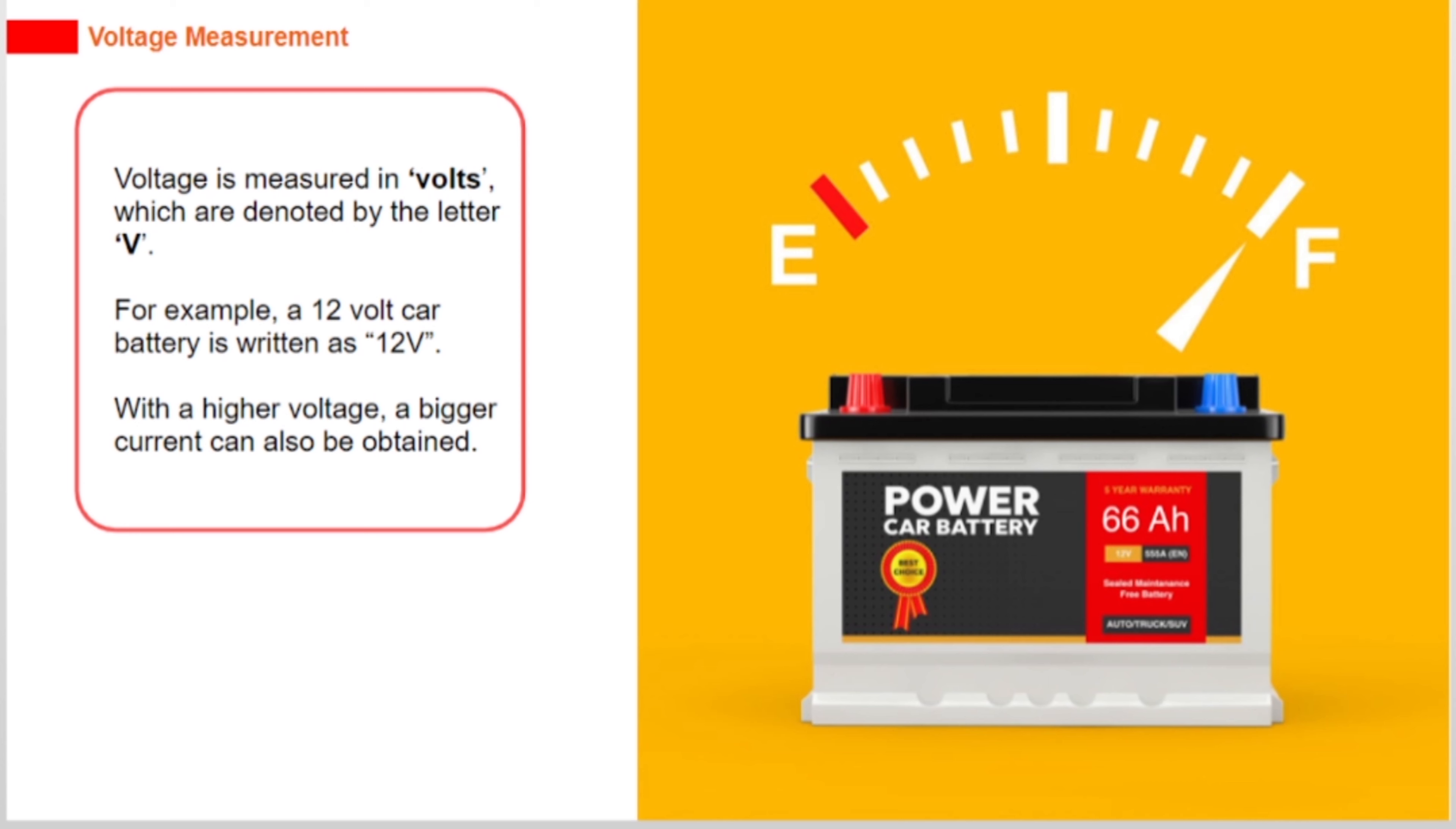We refer to the rate at which the electrons flow through a conductor as current. Current is like how much water falls per second in the waterfall analogy. Current is typically identified as the letter I in diagrams and formulas.